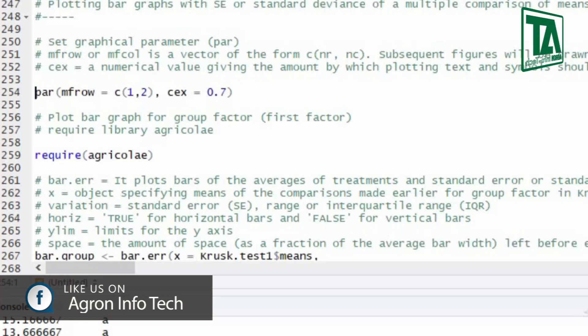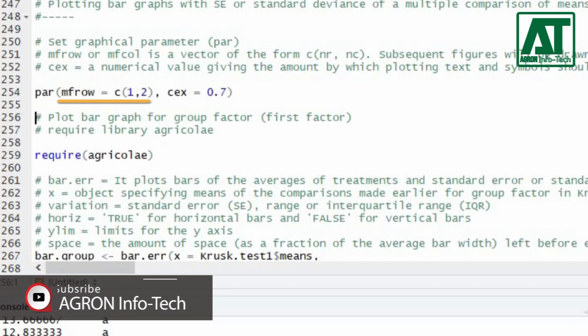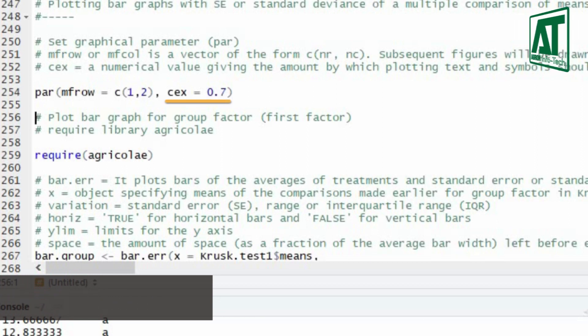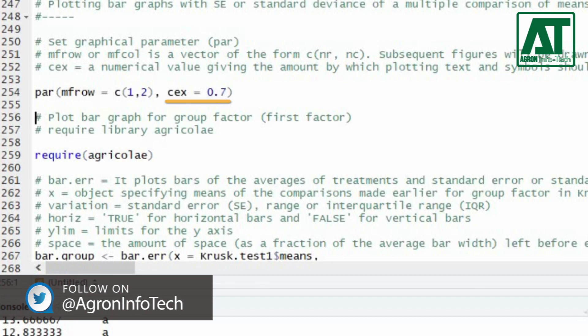Use PAR function to set the graphical parameter. MFrow is a vector of rows and columns array. Subsequent figures will be drawn according to the values used. CEX is a numerical value giving the amount by which plotting text and symbols should be magnified relative to the default.